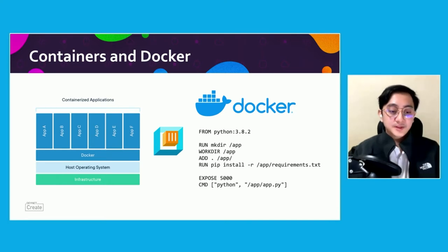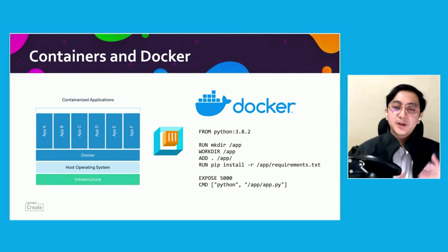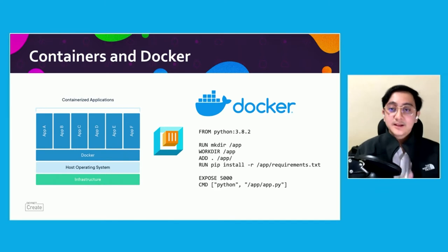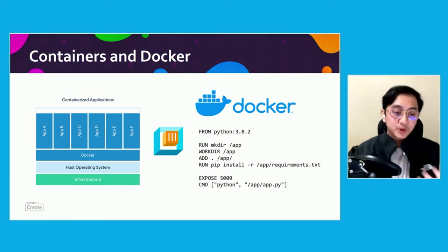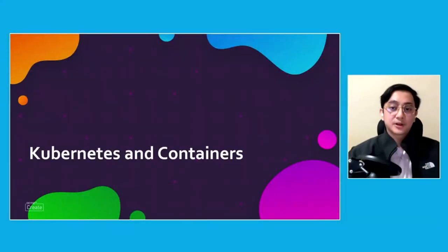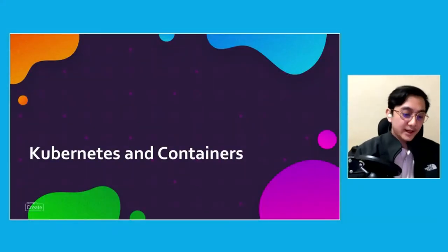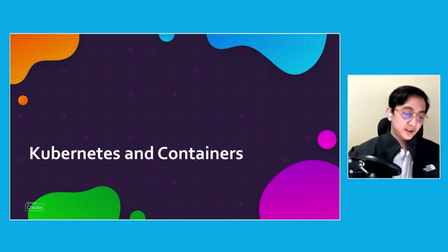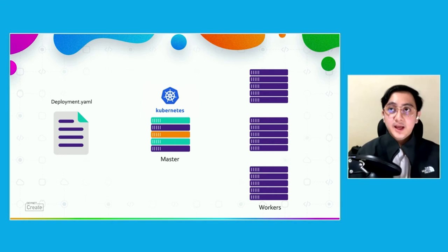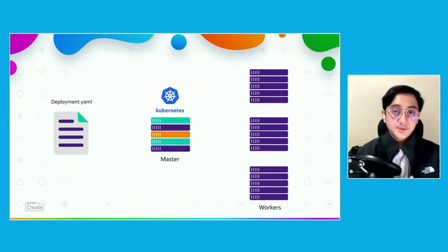But with containers comes the need for orchestration. Sure, you have your microservices, but how do you make things run together, run smoothly, and behave like your intended application in the grand scheme of things? This is where we bring in Kubernetes. Kubernetes is essentially container orchestration, and you can think of it as employing a specific desired state management system.